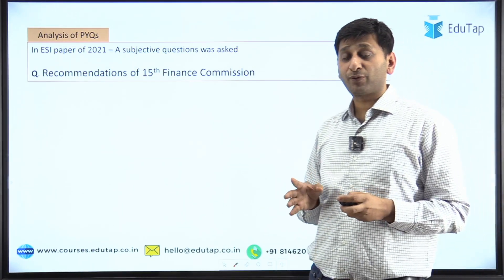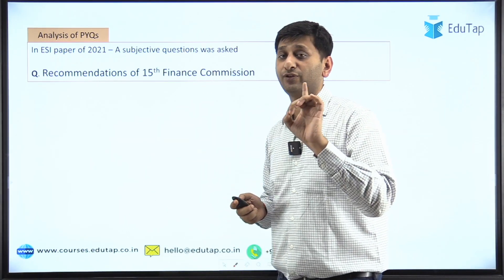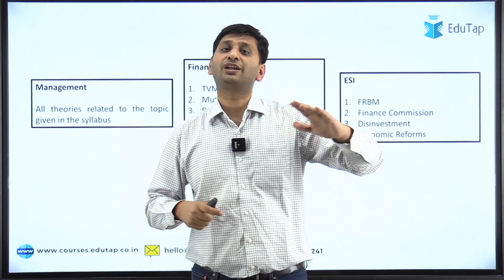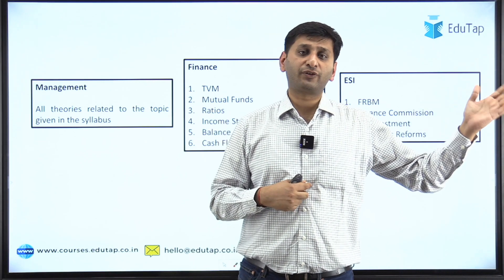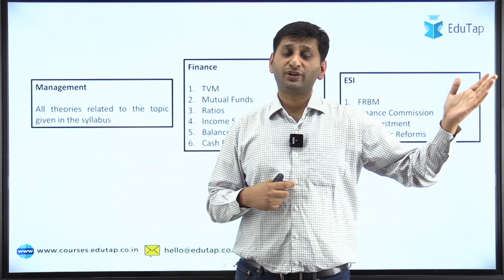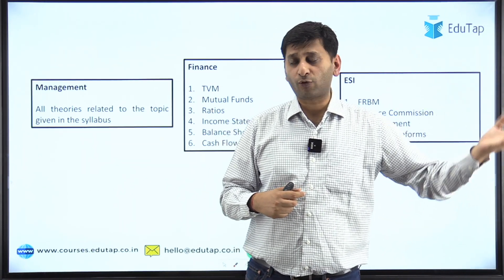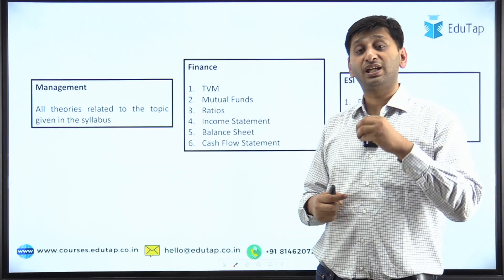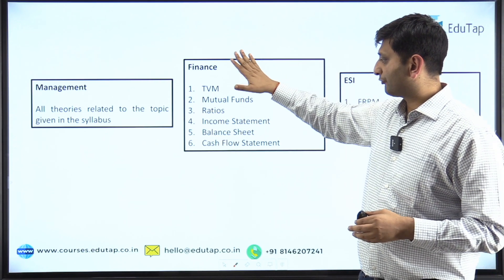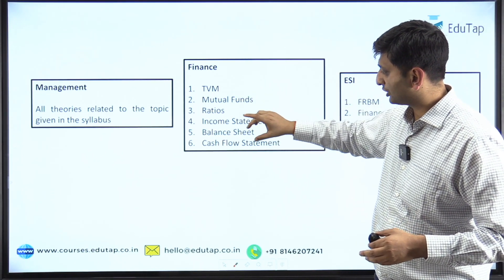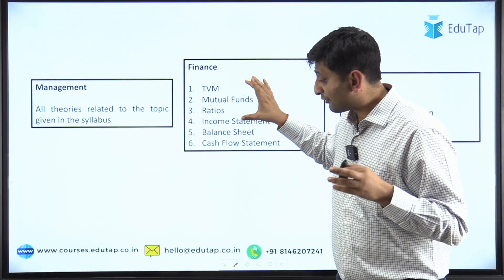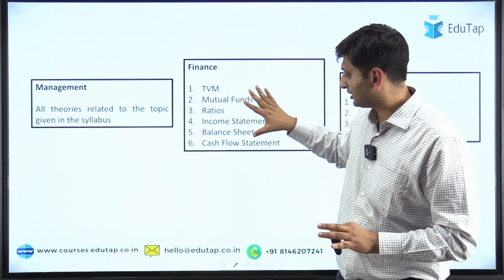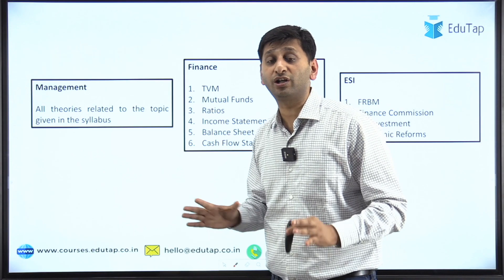My recommendation is: first priority goes to the syllabus, but if you get time, do at least these things. In management, don't constrain yourself to only the theories listed in the syllabus. If studying motivation, don't just study Adams and Vroom — also cover goal setting theory, self-determination theory, and self-efficacy theory. For leadership, study path-goal theory, Hersey and Blanchard situational theory, and Fiedler's contingency theory. In finance, cover time value of money, mutual funds, ratios, and financial statements — income statement, balance sheet, and cash flow statement. These are the core of finance and you cannot leave them out.